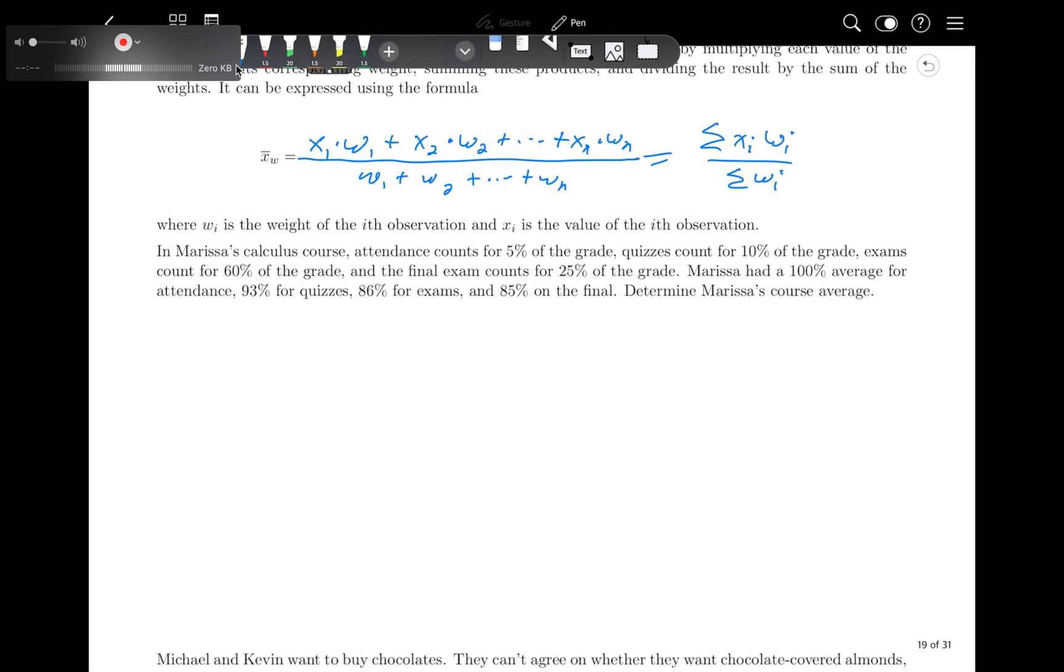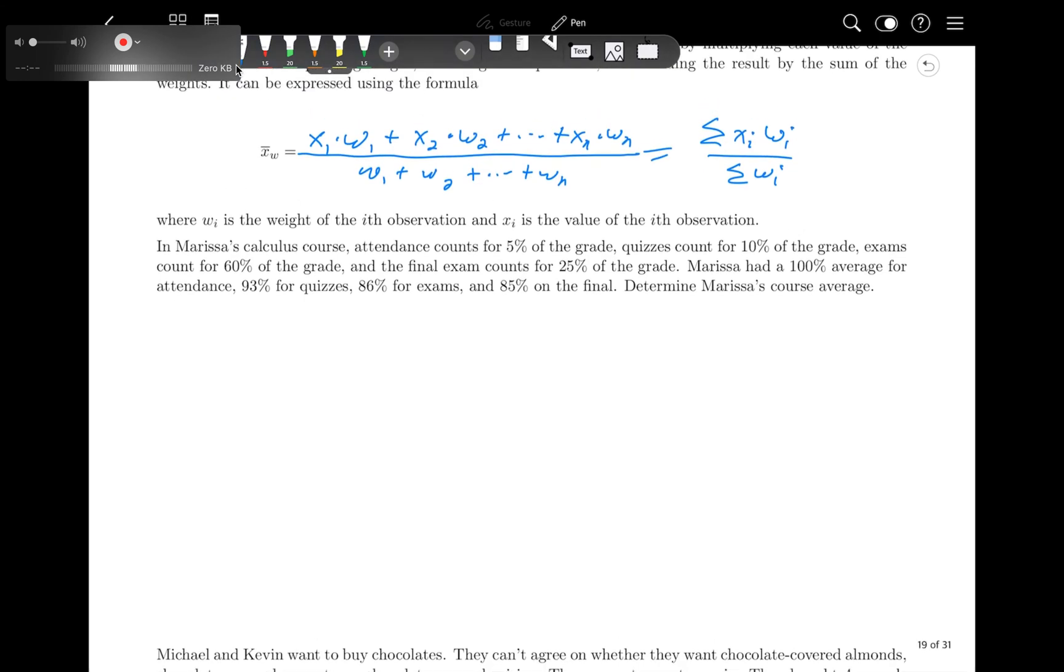In Marissa's calculus course, attendance counts for 5% of the grade, quizzes count for 10% of the grade, exams count for 60% of the grade, and the final exam counts for 25% of the grade. So those are our weights, because those are how much each one is worth. So our weights, let's just make a little table here, are 5%, 10%, 60%, and 25%. And then our data values are her scores on each.